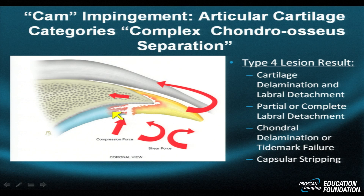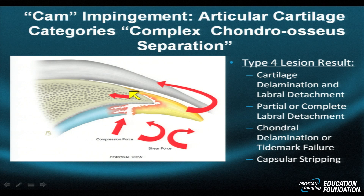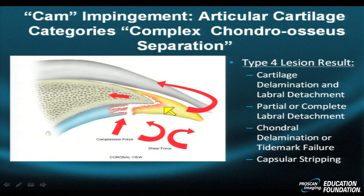In the type 4 lesion, the fibrocartilage is pushed outward, the hyaline cartilage is pushed inward — they are separated and serrated. The fibrocartilage comes undone from the acetabulum and the capsule begins to strip away.